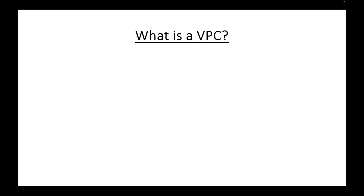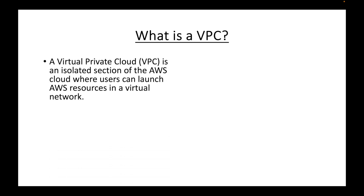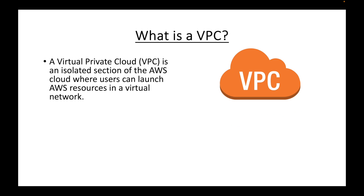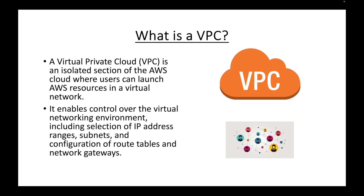The next common question is: what is a VPC? VPC is the networking service in AWS and stands for Virtual Private Cloud. It is a service that helps you create an isolated section in the AWS cloud where you can start creating your resources within a virtual network. With VPC you have control over the virtual networking environment — you can choose your custom network, decide on the IP address range, number of subnets, route table configurations, and network gateways.